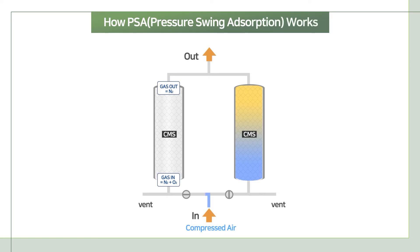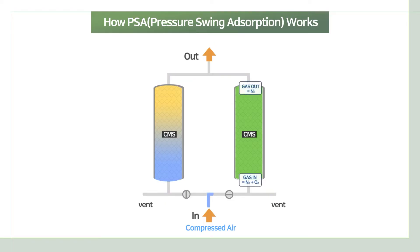When compressed air gets into one of the CMS columns to be separated, it absorbs oxygen at the pore of CMS, while the other column desorbs them to be regenerated for the next round. The generator switches these two columns between absorption and desorption for semi-permanent use.